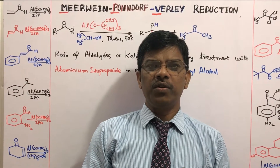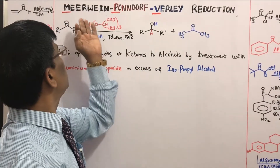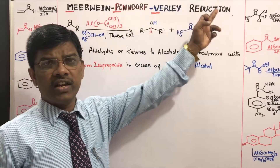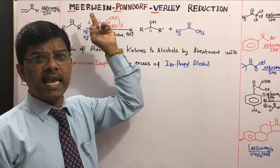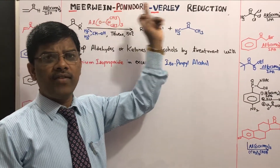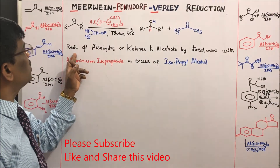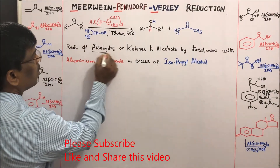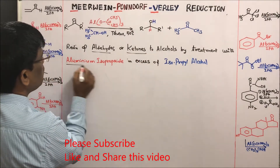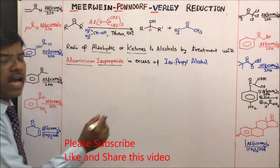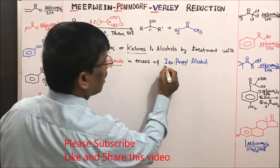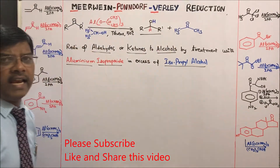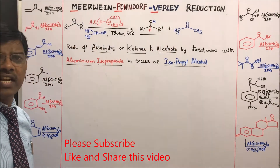Today we are going to learn a very important named reaction: Meerwein-Ponndorf-Verley reduction, also known as MPV reduction. The reduction of aldehydes or ketones in the presence of aluminum isopropoxide and isopropyl alcohol gives alcohols. It is a reduction reaction.